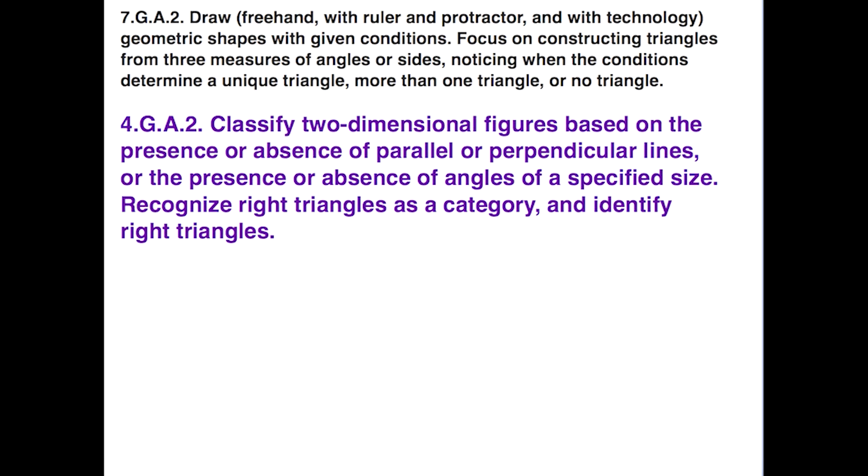Another standard in fourth grade, this one is 4.G.A.2, talks about classifying two-dimensional figures based on the presence or absence of parallel or perpendicular lines, or the presence or absence of angles of a specific size. Notice the last statement: recognize right triangles as a category and identify right triangles. So at the fourth grade level, they've already been exposed to the idea of a right triangle.